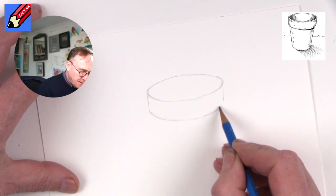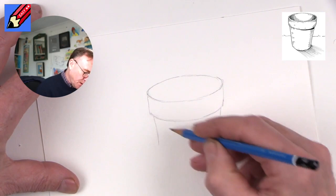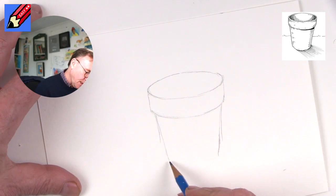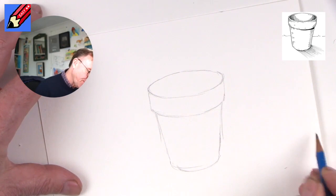And then we want to take the flower pot down at an angle something like that. And when you get to the bottom then join those two lines again with a curve like that.